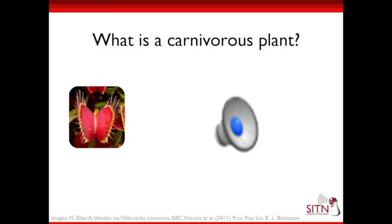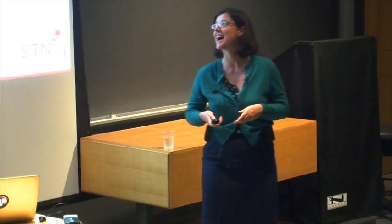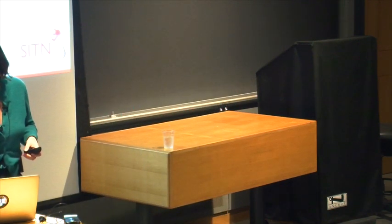The first question people might ask is: what is a carnivorous plant? Does anybody think of something immediately? Venus flytrap — yes, that's commonly the first carnivorous plant someone thinks of. This is a snap trap, and it has these fine hairs on the inside. These hairs can be triggered when an insect walks over them. Once triggered, an electrical reaction happens which causes water to move from the inside of the trap to the outside, causing it to close. I have a video here so you can see what this looks like.